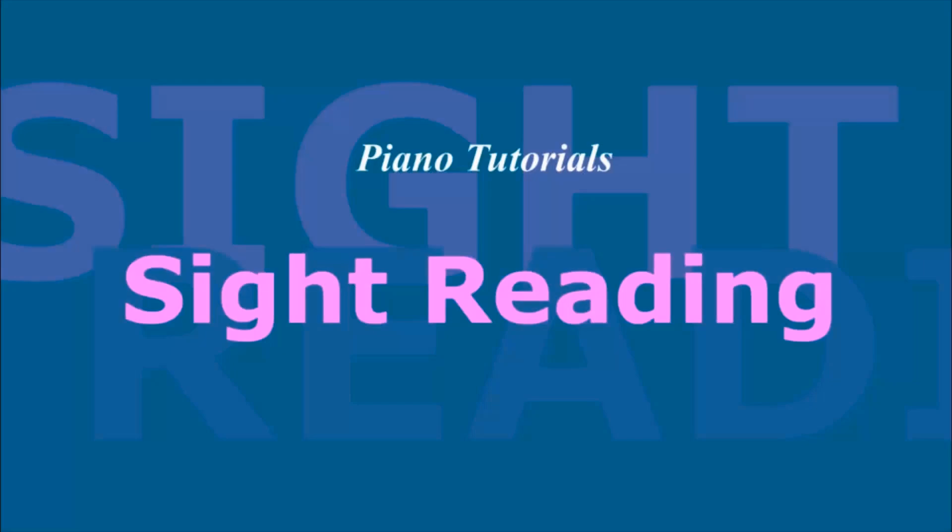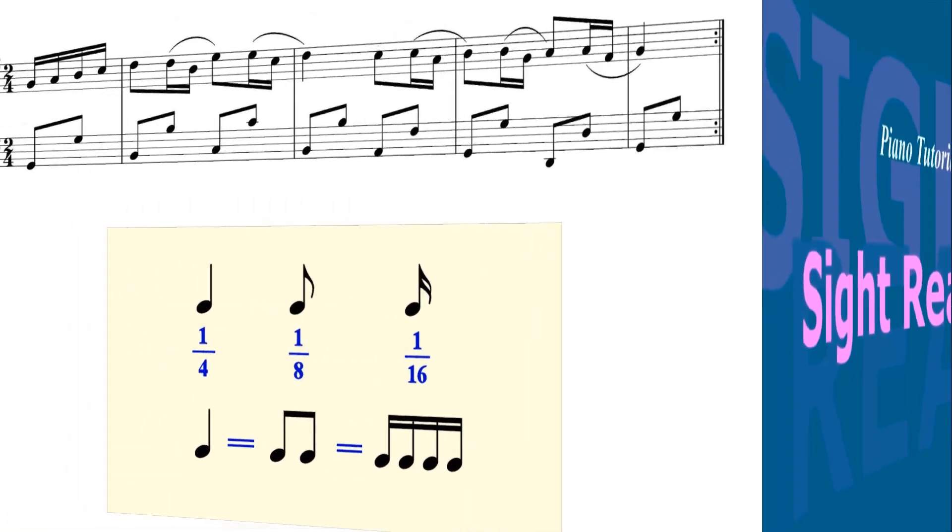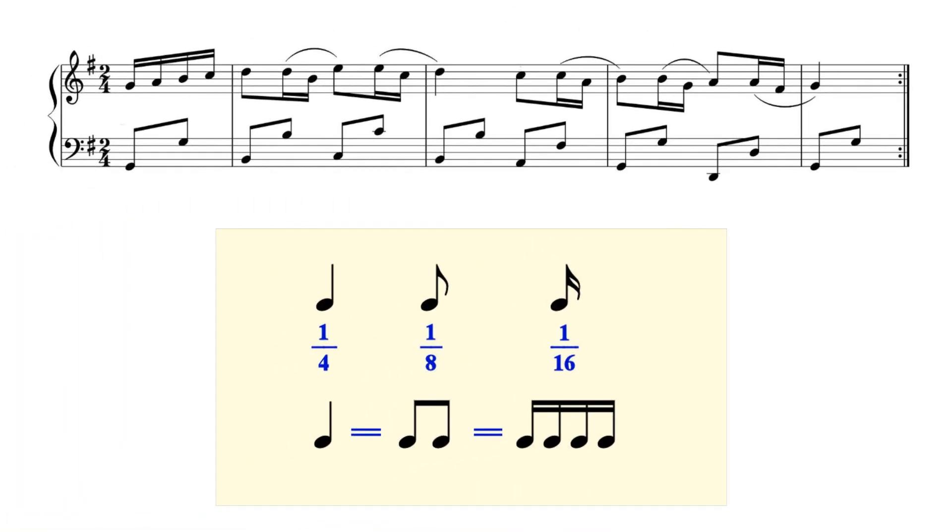In this lesson, we are going to learn the easiest way to count. Notice how this passage consists mainly of 16th and 8th notes? In general, the easiest way to count is to set the metronome to the shortest note. In this case, we set the metronome to the 16th note.